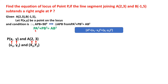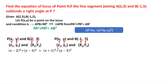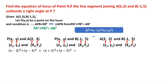For PA², take P as (x₁, y₁) and A as (x₂, y₂): PA² = (x - 2)² + (y - 3)². For PB², take P and B: PB² = (x + 1)² + (y - 5)². For AB², take A(2, 3) and B(-1, 5): AB² = (2 - (-1))² + (3 - 5)² = 3² + (-2)².